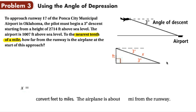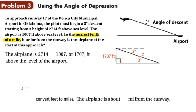Now using an angle of depression: on approach to a runway in Oklahoma, a pilot begins a 3-degree angle of descent. The plane starts at 2,714 feet above sea level, but the airport is at 1,007 feet above sea level. The difference — 2,714 minus 1,007 — gives us 1,707 feet, which is the actual height the pilot needs to descend. The angle of depression equals the alternate interior angle of elevation on the other side, so that angle is also 3 degrees.